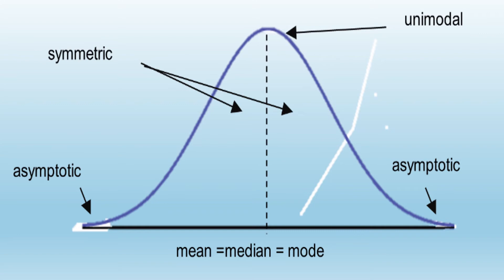It is also symmetrical on its vertical axis. The normal curve is asymptotic, and the mean, median, and mode are all equal.